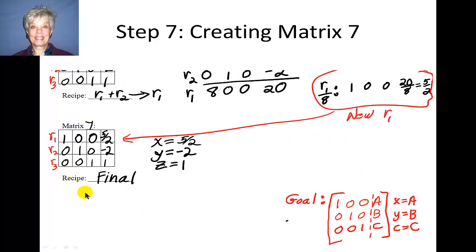And now, here I have my goal. I have the identity matrix here, and I have numbers in the fourth column, and what those are, are what x equals, what y equals, and what z equals. Right here. I have now solved the matrix using Gauss-Jordan. I have the identity matrix, I have the answers to x, y, and z, and I am a happy camper.